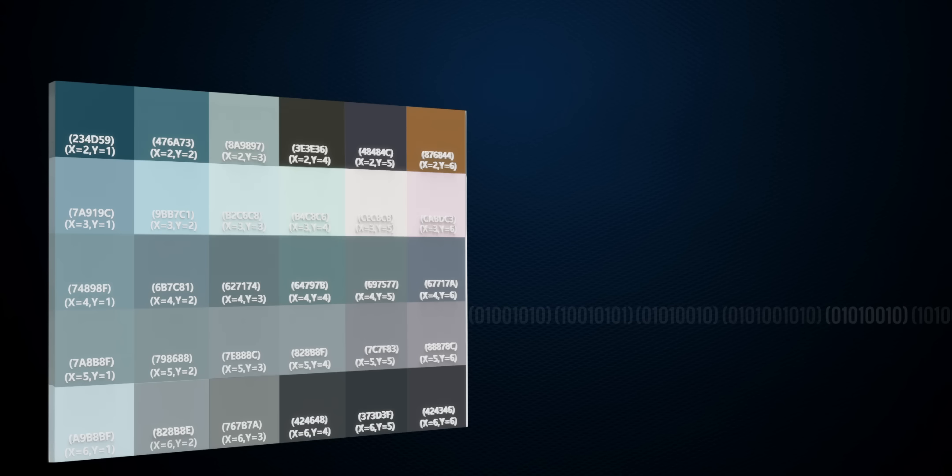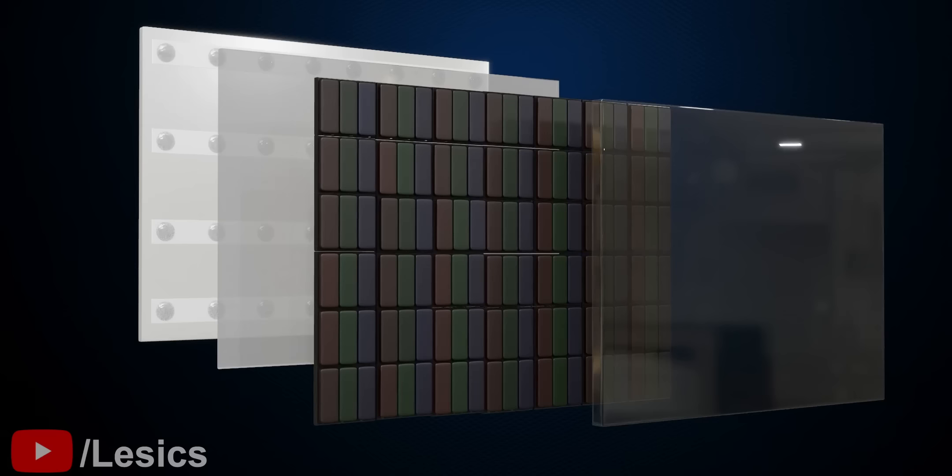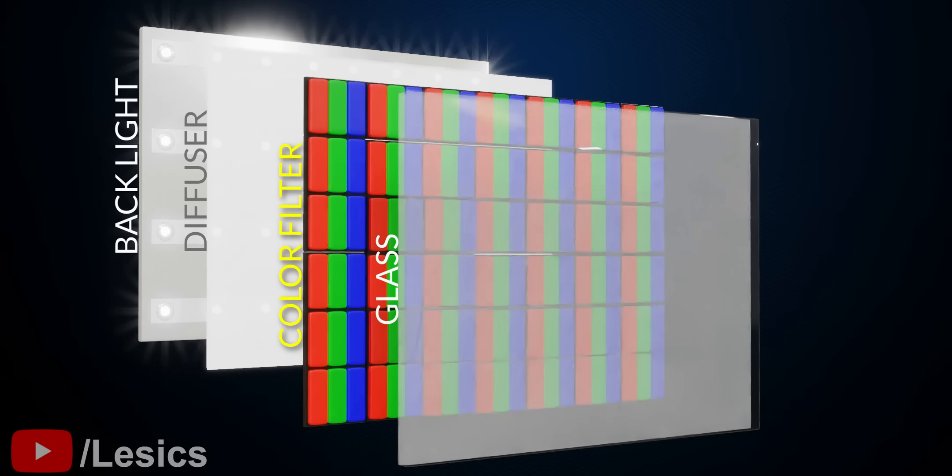Now, let's see how the image reproduction is done practically. Take a uniform white backlight source. Keep a color filter containing multiple small red, blue, and green colors in front of it. Again, place a glass screen in front of it. As soon as we turn on the backlight, all the filters will glow with equal intensity, and what we get at the output is just white color.